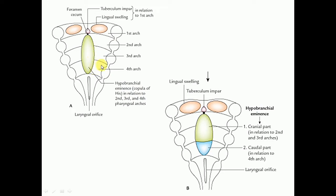Subsequently, this hypobranchial eminence gets subdivided into two parts: a cranial part and a caudal part. The cranial part develops in relation to the second and third arches, whereas the caudal part develops in relation to the fourth arch.